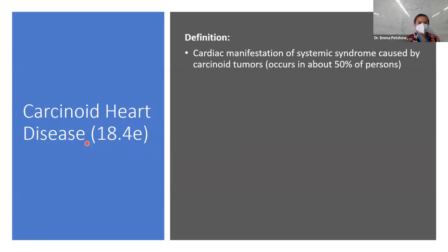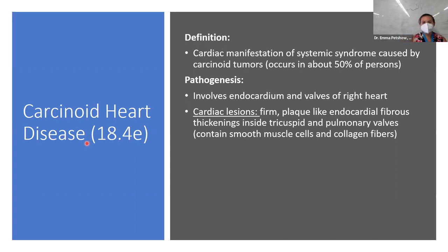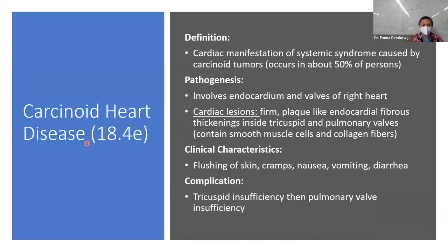Carcinoid heart disease is the cardiac manifestation of a systemic syndrome caused by carcinoid tumors. About 50% of people with carcinoid tumors have cardiac involvement, specifically affecting heart valves — primarily on the right side of the heart. Fibrous plaque-like thickenings appear inside the tricuspid and pulmonic valves containing smooth muscle cells and collagen. Symptoms include flushing, cramps, nausea, vomiting, and diarrhea. The key takeaway: carcinoid heart disease is the one valvular condition that affects the right side of the heart more than the left, leading to tricuspid then pulmonic insufficiency.